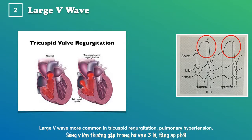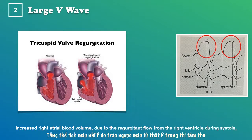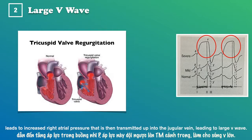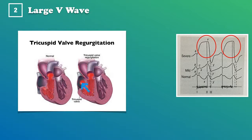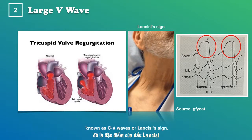The large V-wave is more common in tricuspid regurgitation and pulmonary hypertension. V stands for venous return to the right atrium. Increased right atrial blood pressure, due to regurgitant flow from the right ventricle during systole, leads to increased right atrial pressure transmitted up into the jugular vein, producing a large V-wave. Patients present with palpable and prominent systolic pulsations of both external jugular veins, known as CV waves or Lancisi's sign.